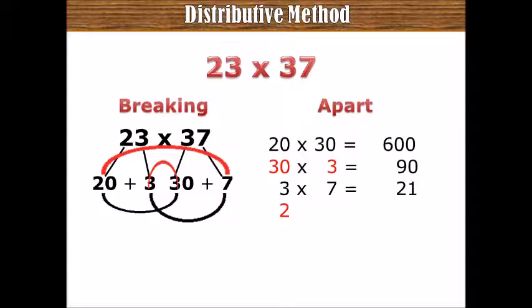Then, we have 20 times 7. 20 times 7, or 20 multiply by 7, 20 times 7 equals to 140. 2 times 7 is 14, then you put 0 at the end, 140.